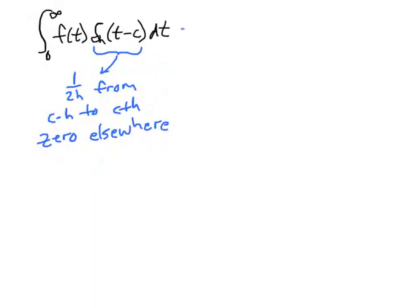So when we compute this integral, we're really multiplying f of t times zero, except everywhere between c minus h and c plus h. So the integral then becomes an integral from c minus h to c plus h.